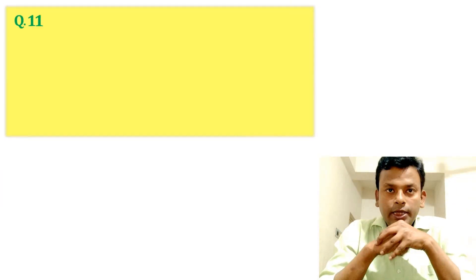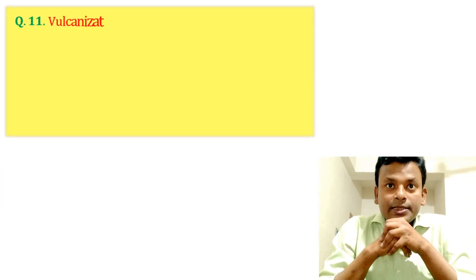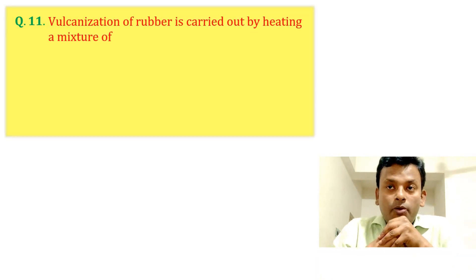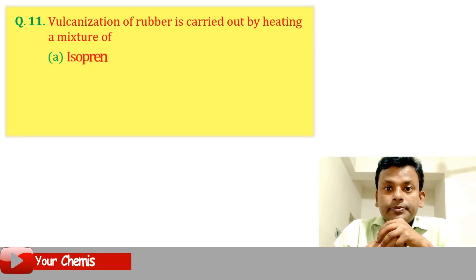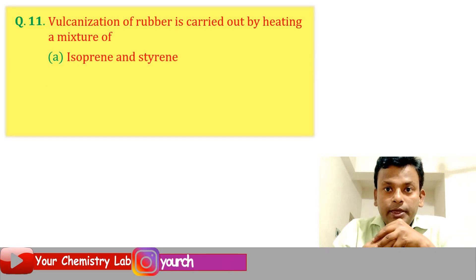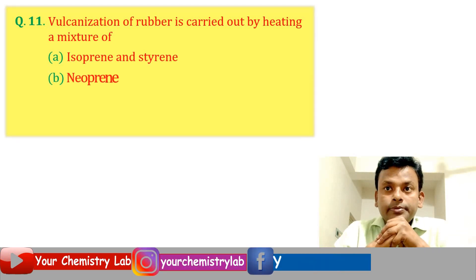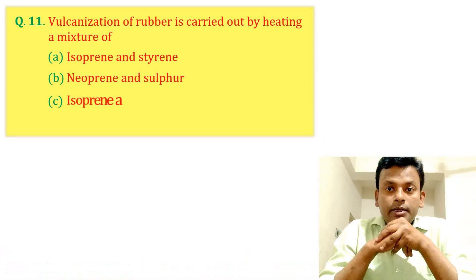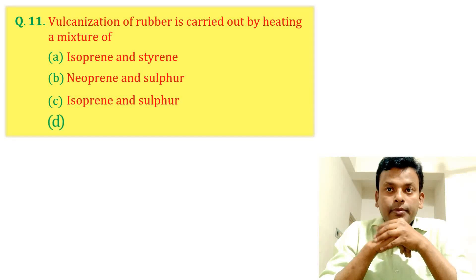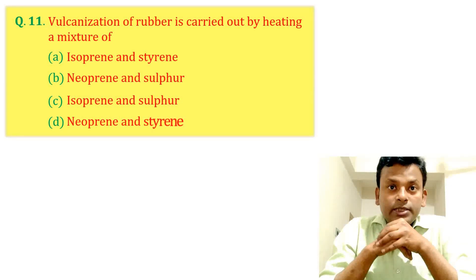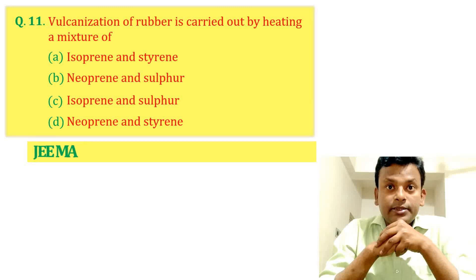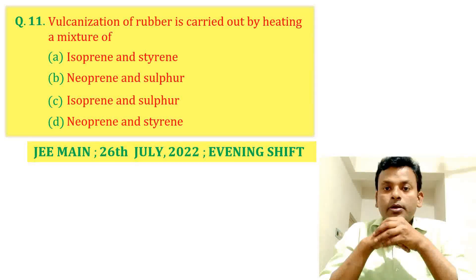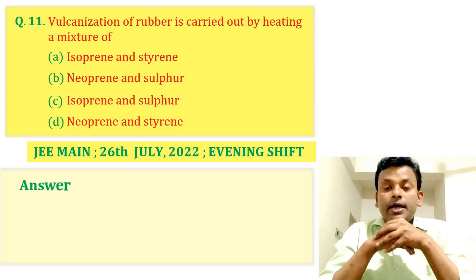Question 11: Vulcanization of rubber is carried out by heating a mixture of — Options A, B, C, and D. This question was set in JEE Main 26th July 2022 evening shift. Answer: Option C is correct.